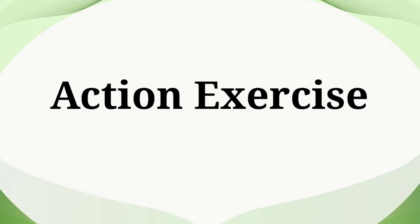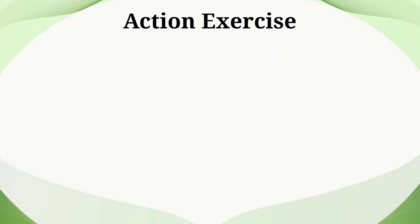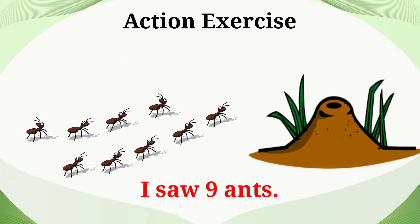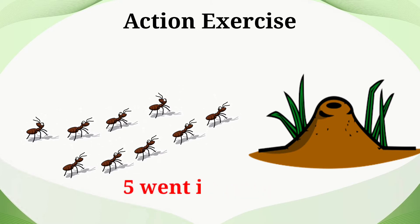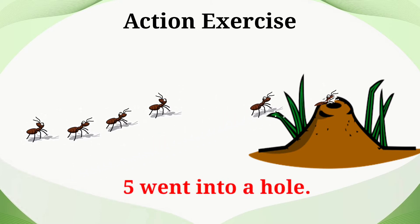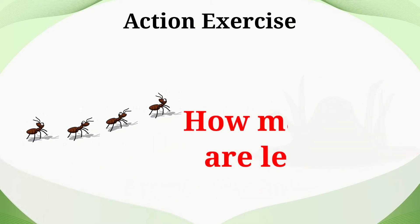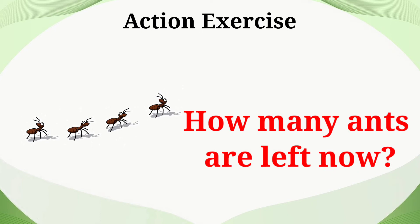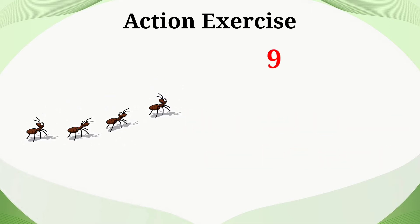Let's see the first question. I saw 9 ants. 5 ants went into a hole. How many ants are left now? Now let's count: 1, 2, 3, 4. Write them. 9 minus 5 is equal to 4.